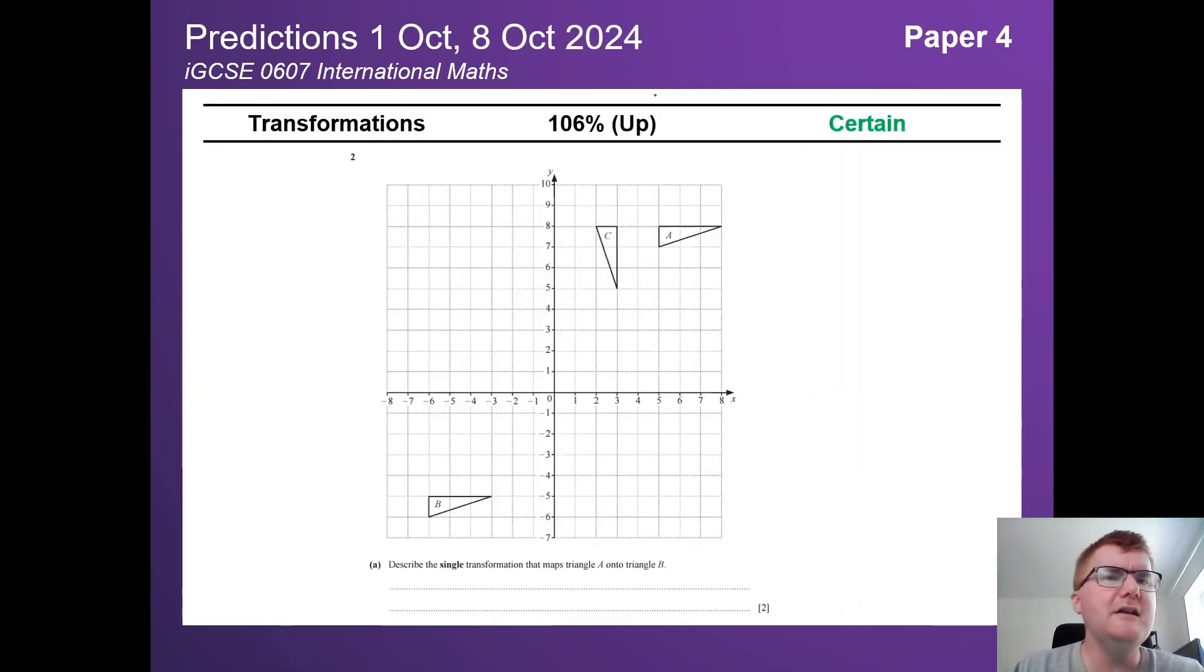Transformations up, it certainly appeared much more on the very recent papers. This is a very clear example here. We have to identify the transformation. Using those words like translation here. So this is a translation in this case. But things like rotation, enlargement and stretches. Please don't forget about stretches, often gets forgotten about on the 0607 course.